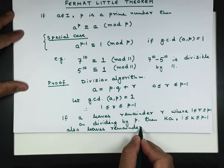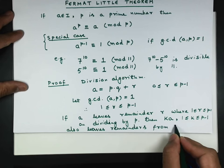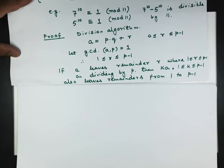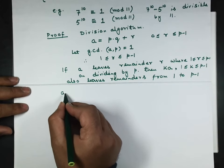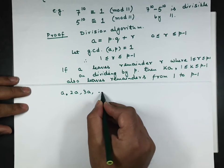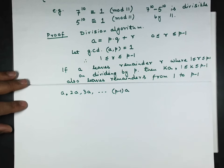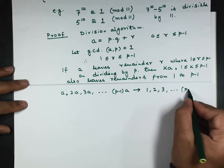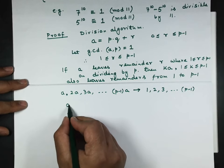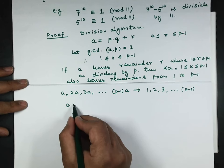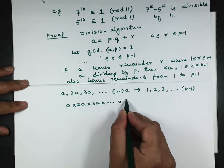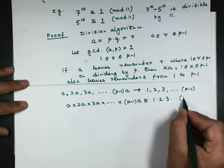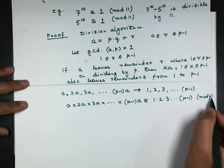Let us see: if we take a, 2a, 3a, ..., (p-1)a, they will give remainders 1, 2, 3, ..., p-1. So if we multiply these all together: a × 2a × 3a × ... × (p-1)a, they give remainder 1 × 2 × ... × (p-1) modulo p by congruence arithmetic.